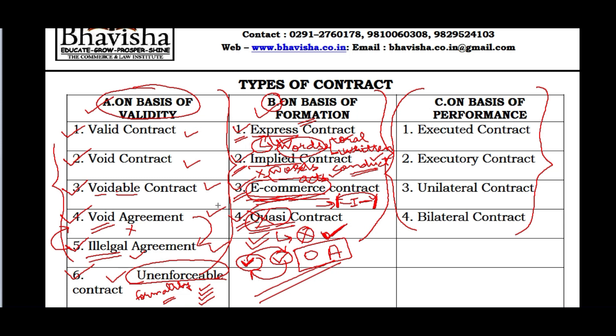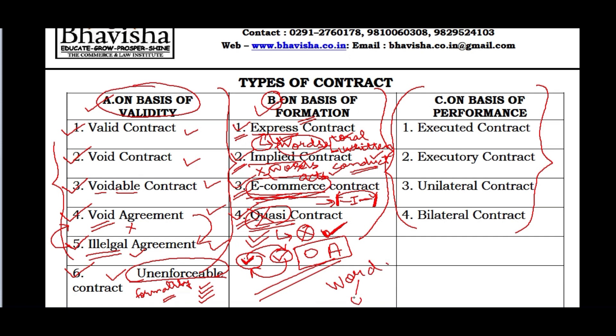Express contracts are those which are expressly made in words, either oral or written. When you express your feelings, you do so by speaking or writing - that is express. Whenever communication happens between individuals using words, those contracts where words have been used are considered express contracts.